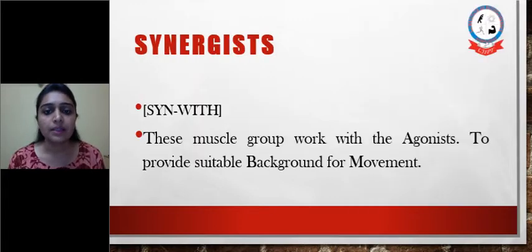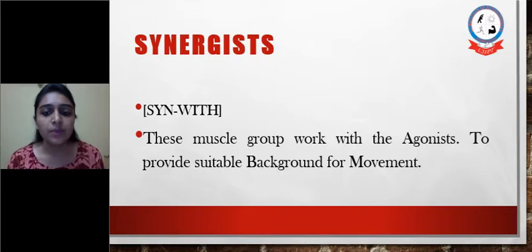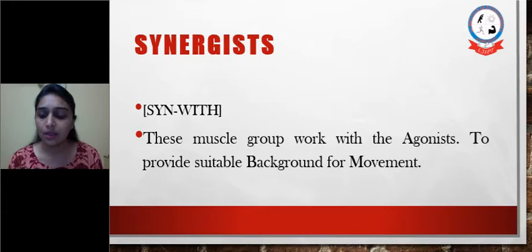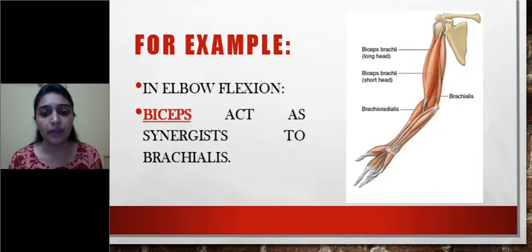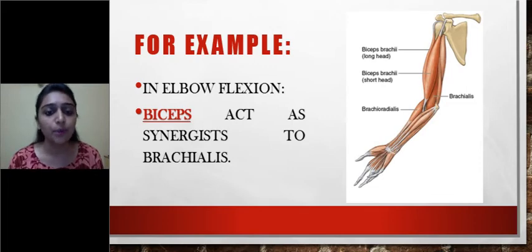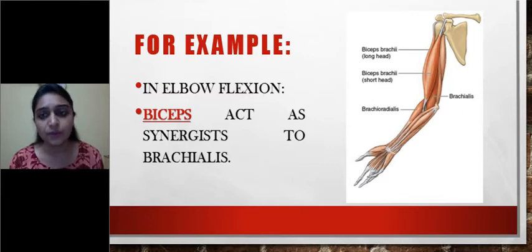Next is synergist. 'Syn' means 'with' — it is a Latin word. These muscle groups work with the agonist to provide a suitable background for movement. For example, in elbow flexion, biceps acts as a synergist to brachialis. It helps to generate more force along with the brachialis so that elbow flexion can be very forceful.